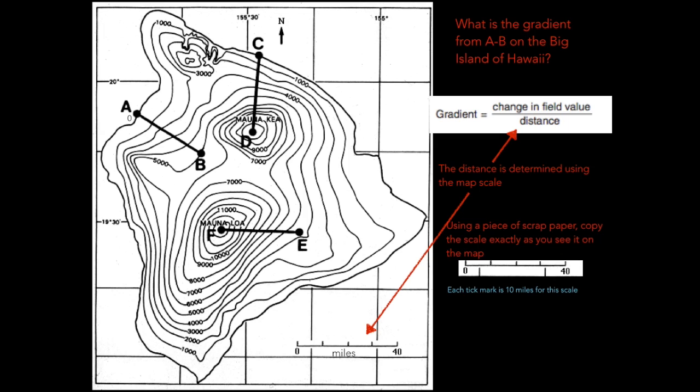Every tick mark on this scale you can see is 10 miles. If you line up your paper with A to B, you're going to see that it is 30 miles between A and B. So we're at three tick marks in and every one is 10 miles.